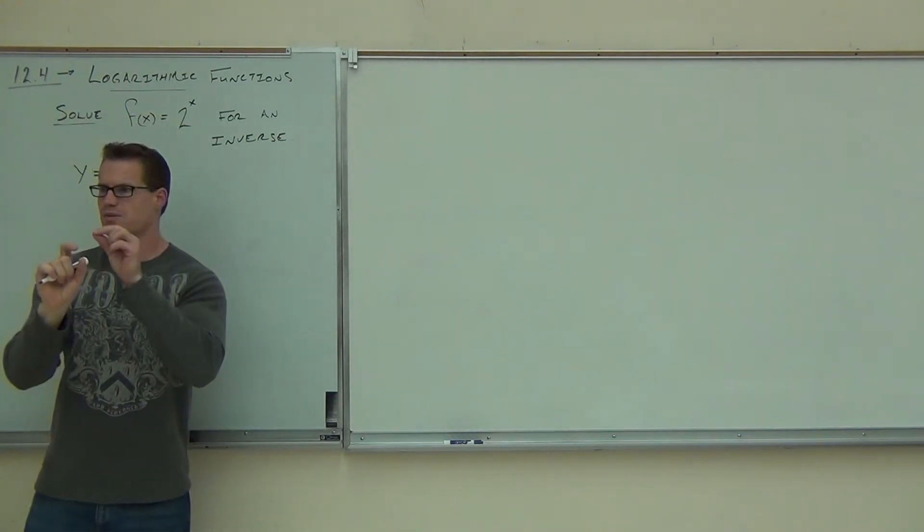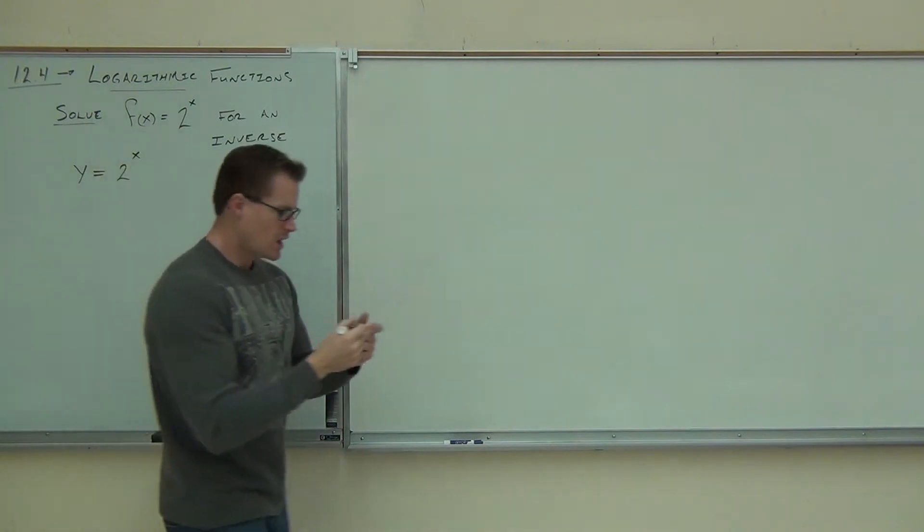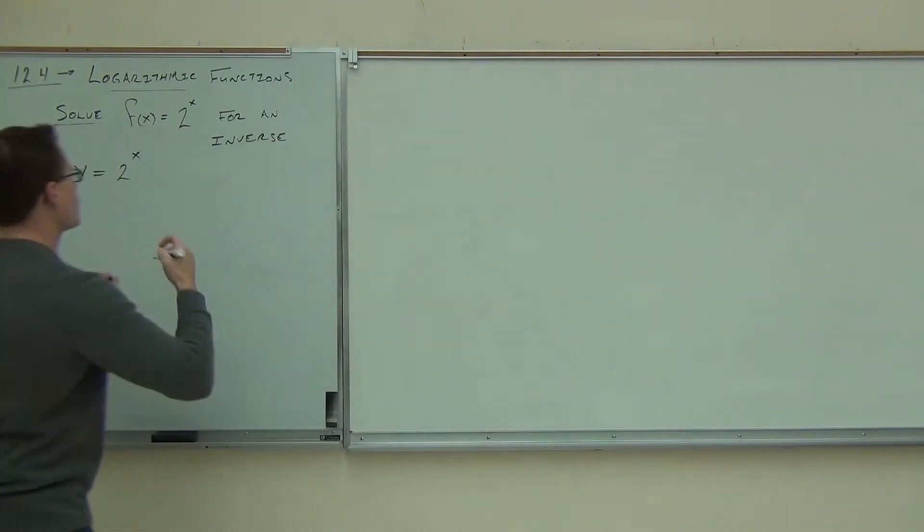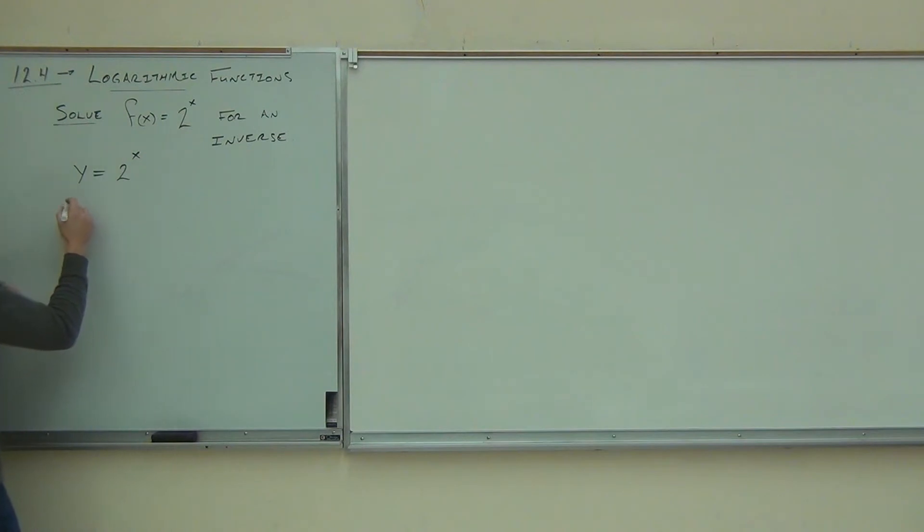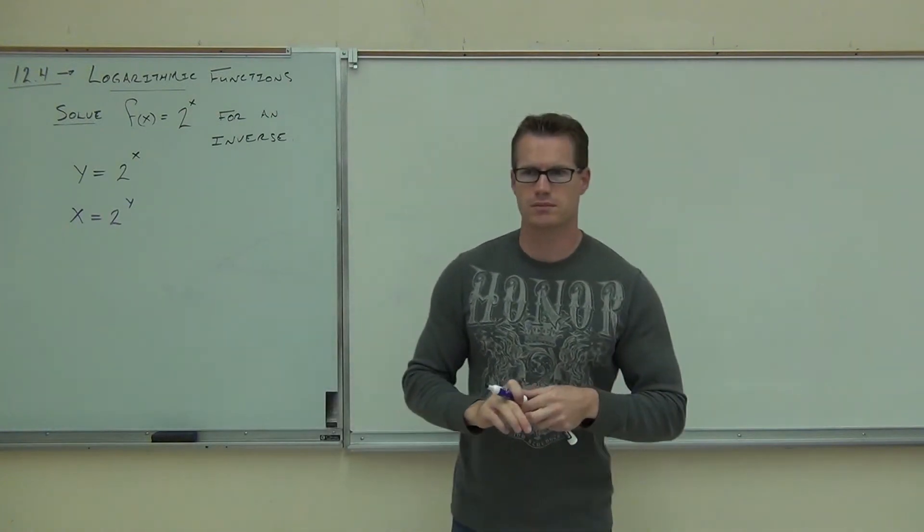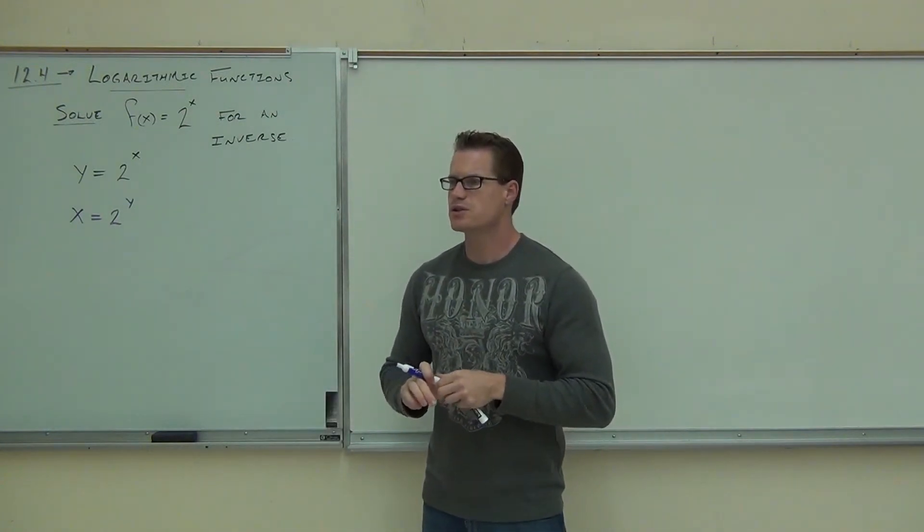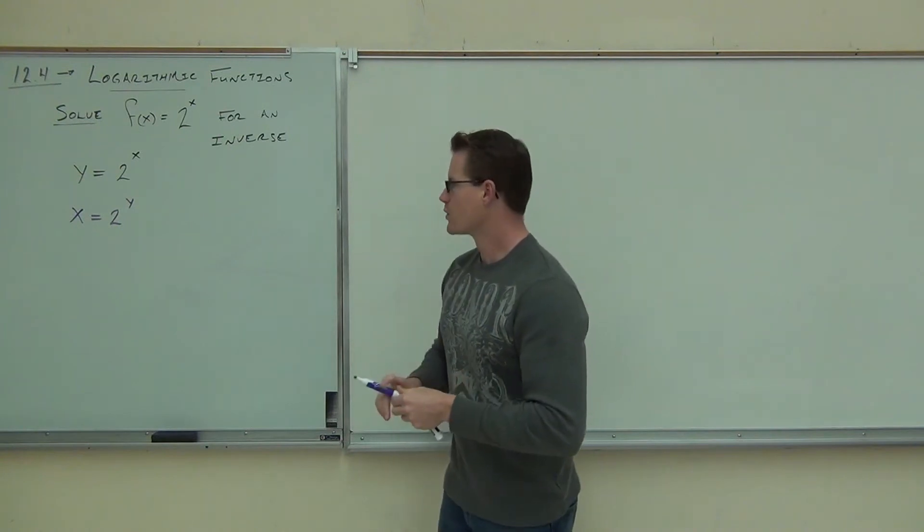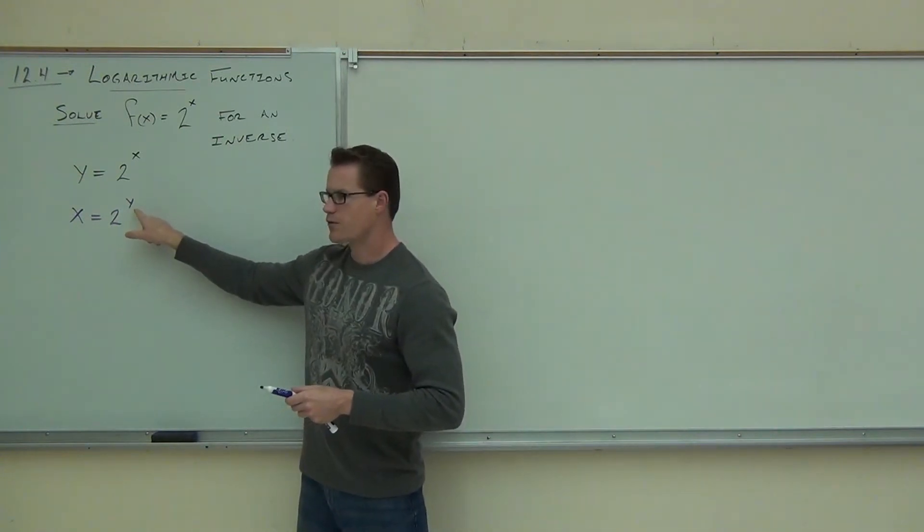Do you remember that? Hopefully you do. And the next thing you do, what do you do after you replace your f(x) with a y? You replace x. Yeah, you switch them, right? Every x becomes a y, every y becomes an x. So check this out. If I'm trying to solve this for an inverse, my very next step is to go, okay, instead of y = 2^x, it should be x = 2^y. Do you follow? Hopefully, yeah, you follow me. And the next thing you do is you try to solve that for y, correct? How in the world do we solve that for y?